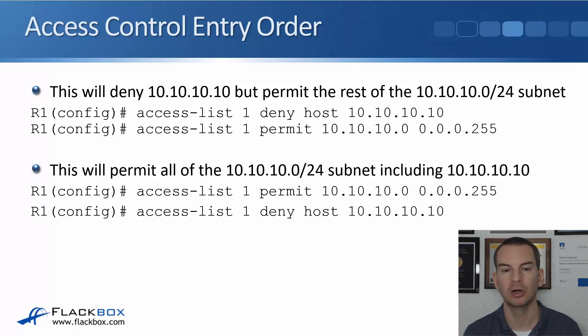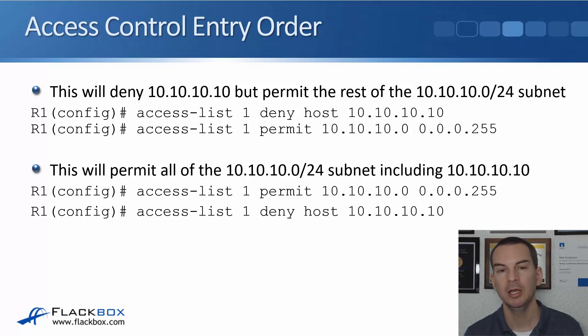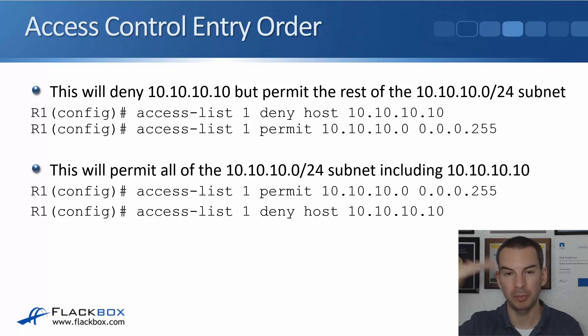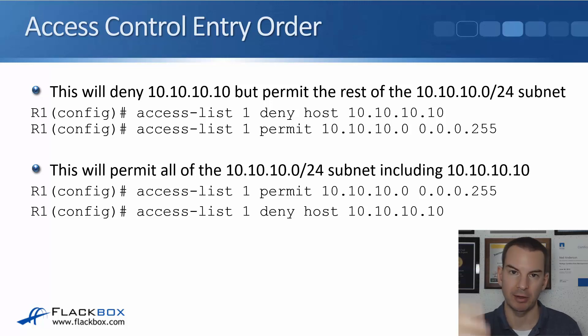The order of your access control entries is important. You want to put the most specific entries at the top of the list and the less specific ones nearer the bottom.